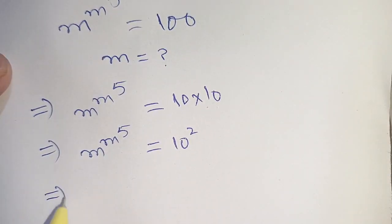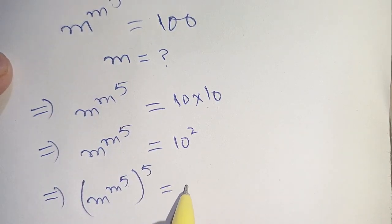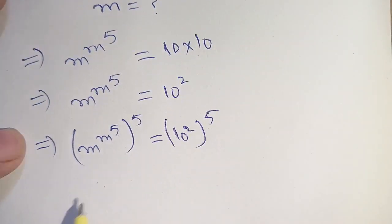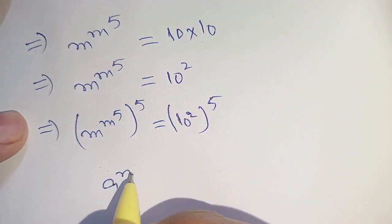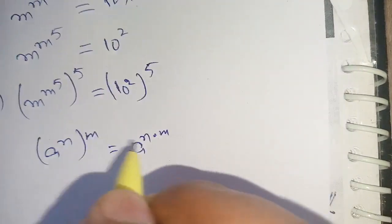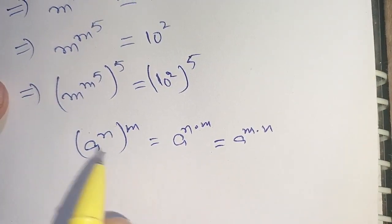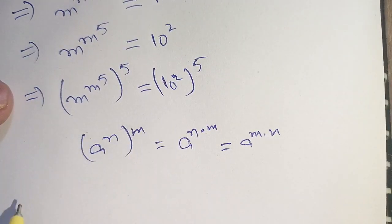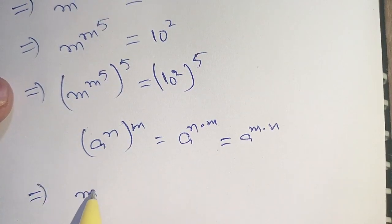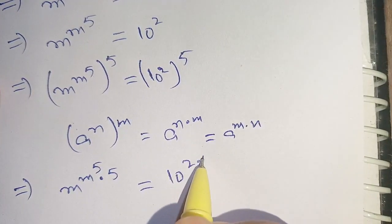Now in the next step we can write this equation as m raised to the power m raised to the power 5, bracket power 5, is equal to 10 raised to the power 2, bracket power 5. We know that a raised to the power n, bracket power m, is equal to a raised to the power n times m, which is equal to a raised to the power m times n. Now on applying this identity on the left hand side as well as on the right hand side, we have m raised to the power m raised to the power 5 times 5 is equal to 10 raised to the power 2 times 5.